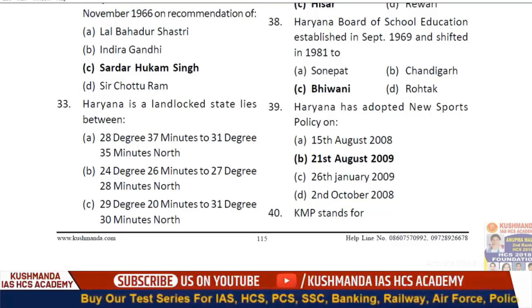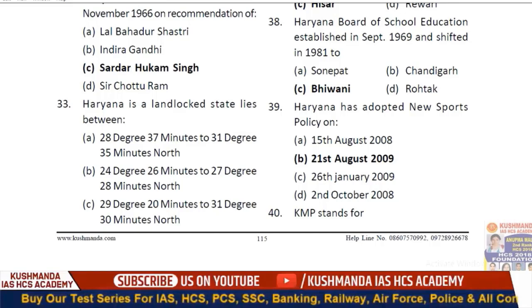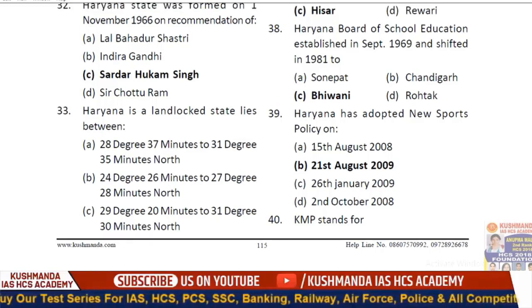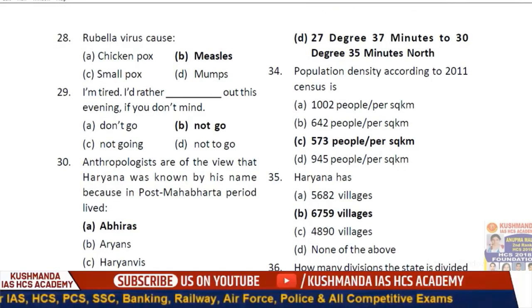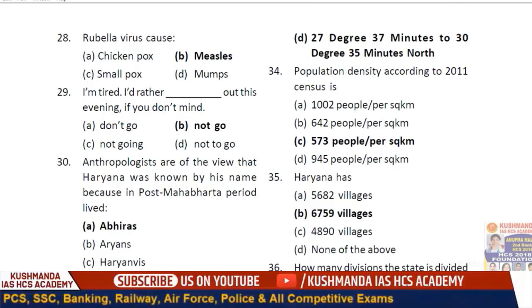Question 33: Haryana is a landlocked state. Its D option answer is: it lies between 27 degrees 37 minutes to 30 degrees 35 minutes north latitude. All these answers are as provided by the Haryana Public Service Commission.